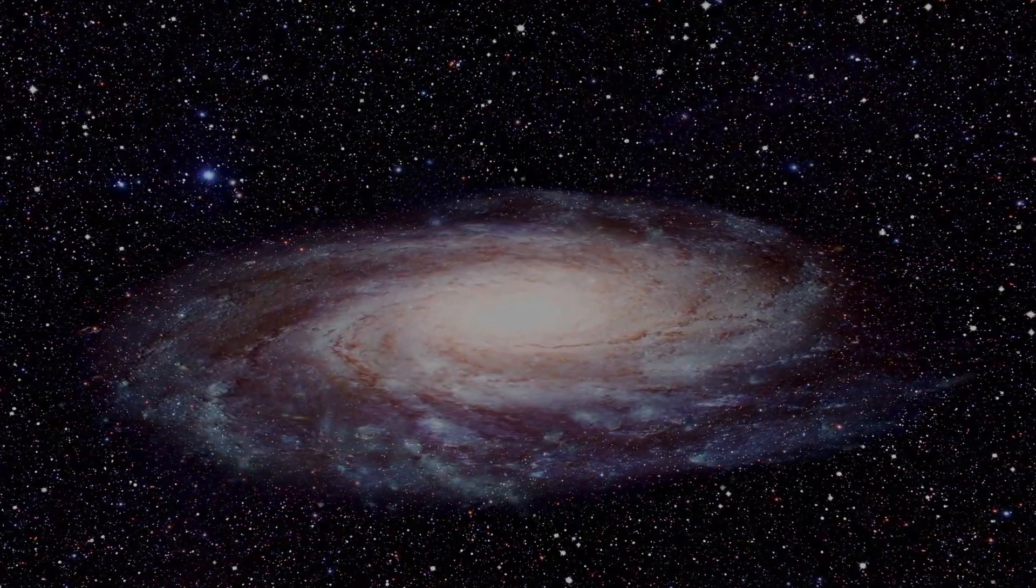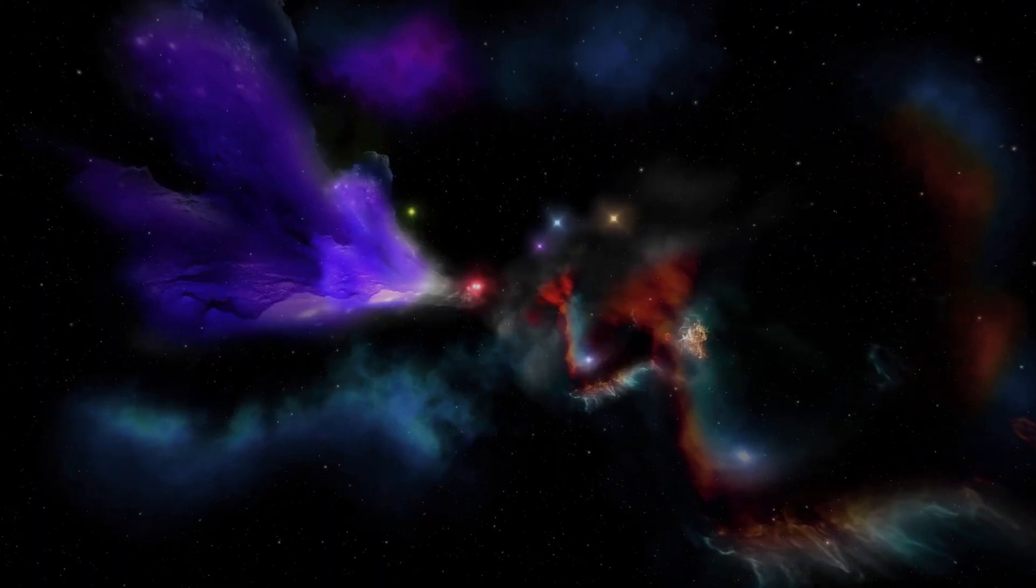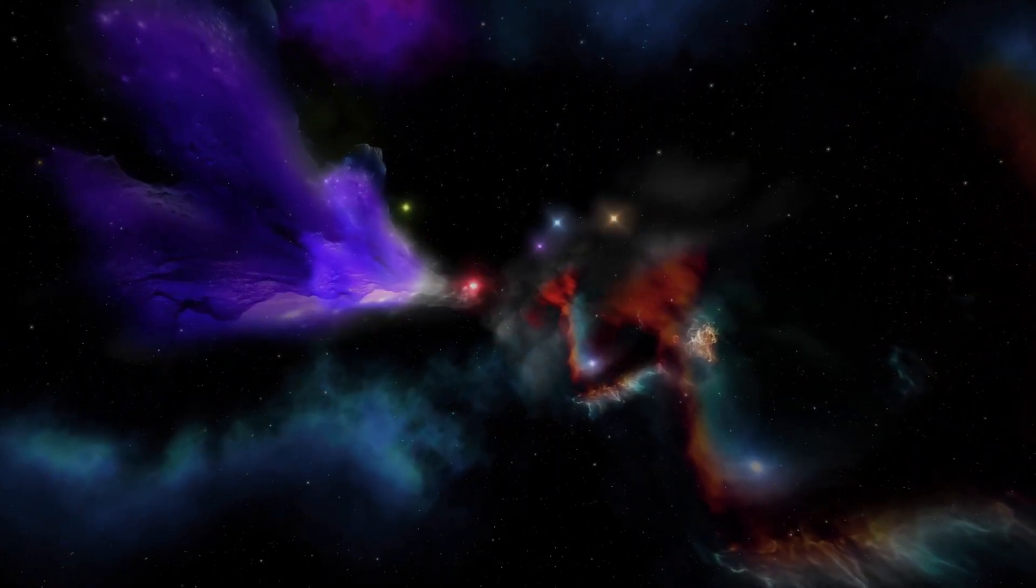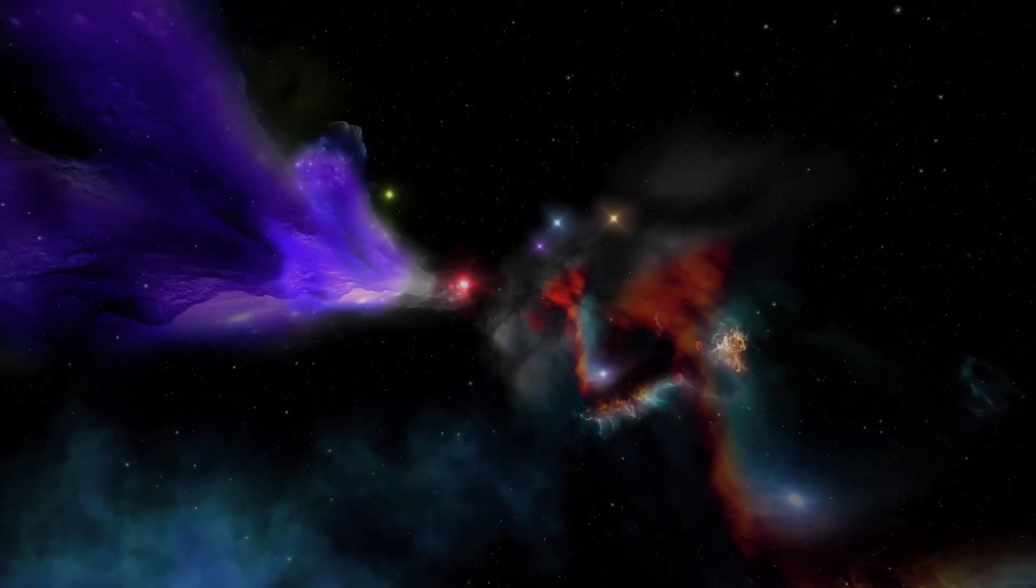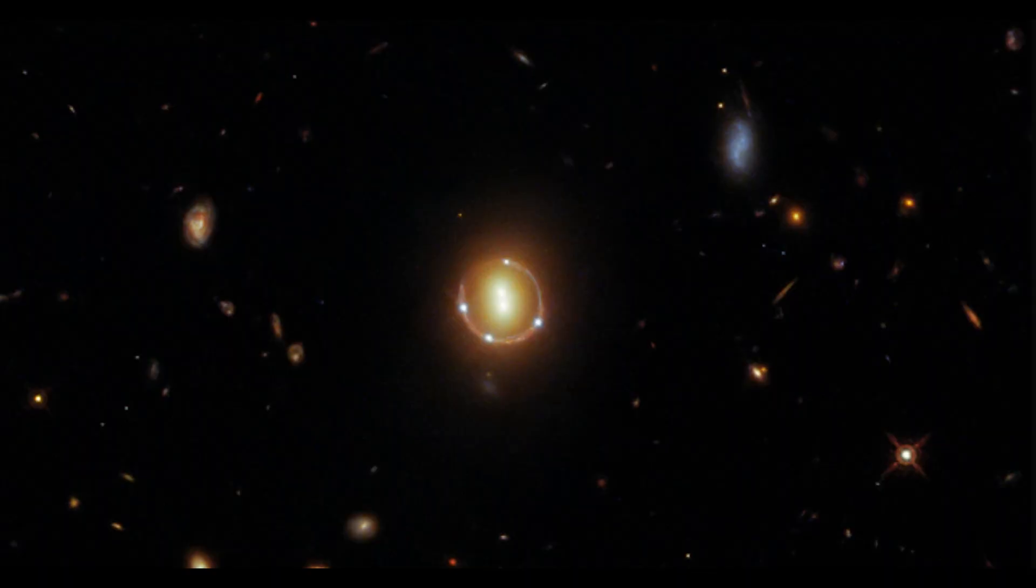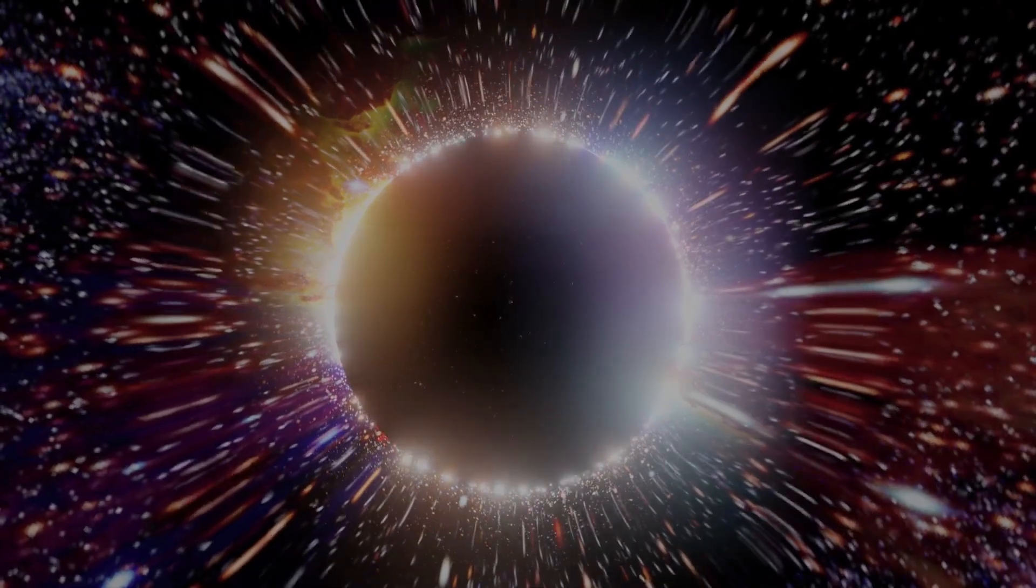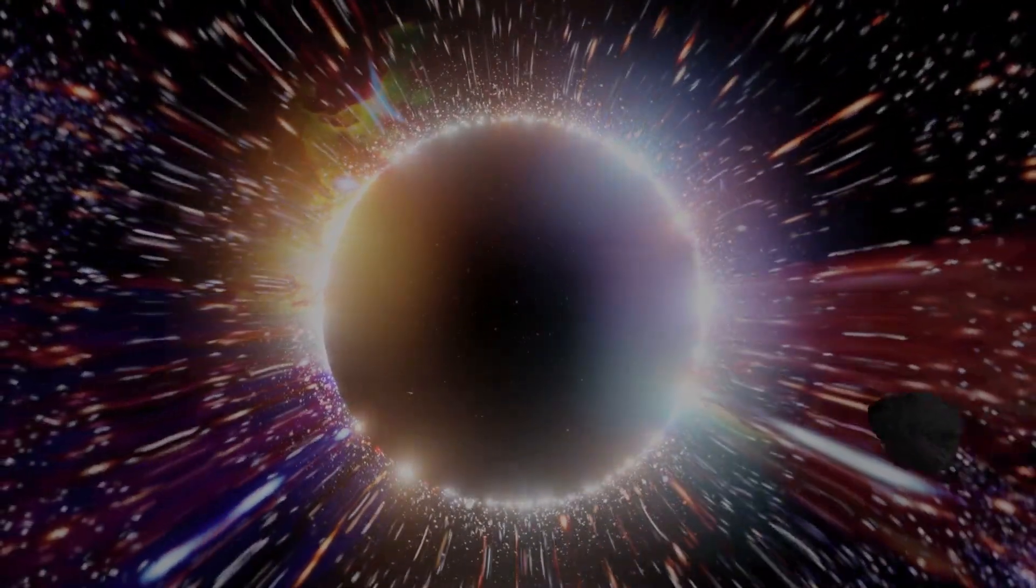SPT-S J041839-4751.8 is the name of the galaxy in question, and it is located 12 billion light-years away. Here's a closer look at it, also processed by SpaceGuy44. We wouldn't be able to observe this galaxy at all if it weren't for the Einstein ring, according to SpaceGuy44.